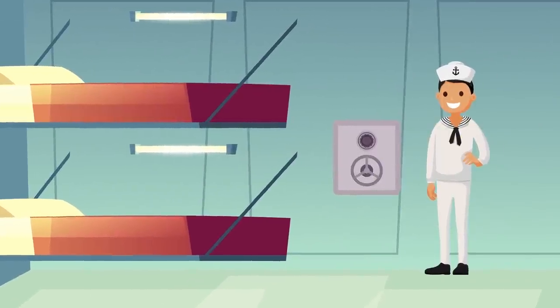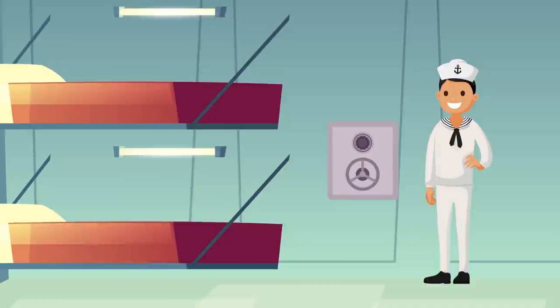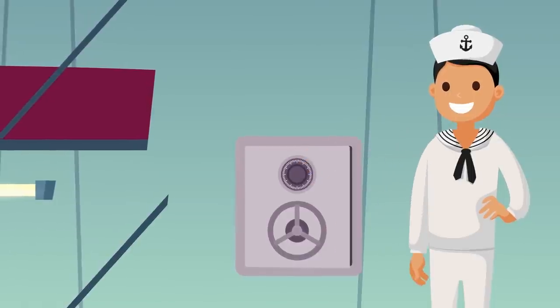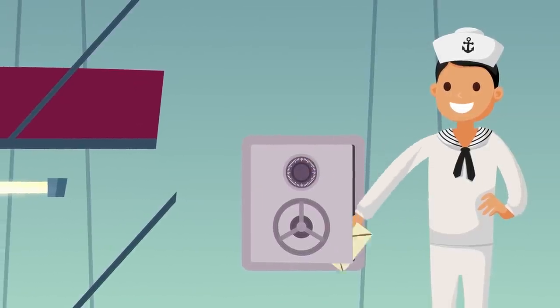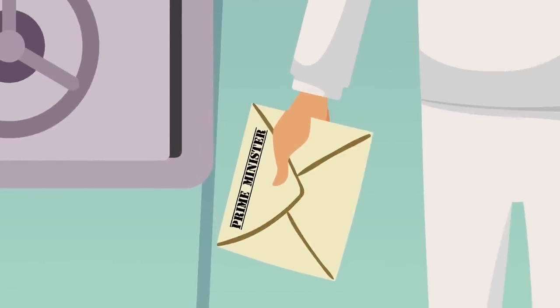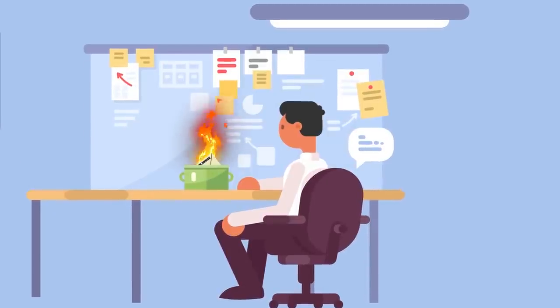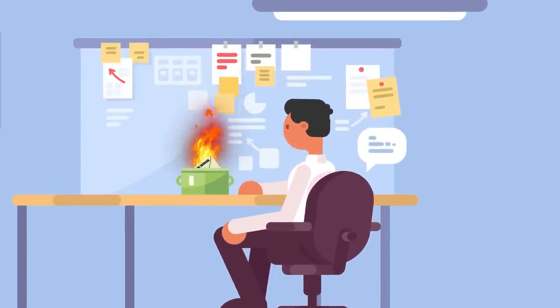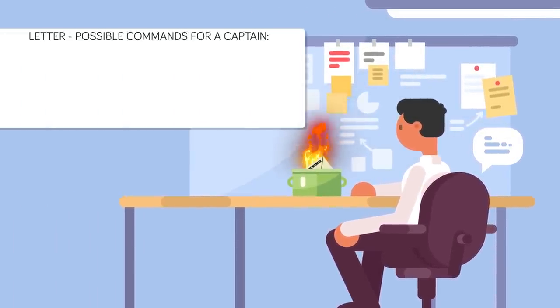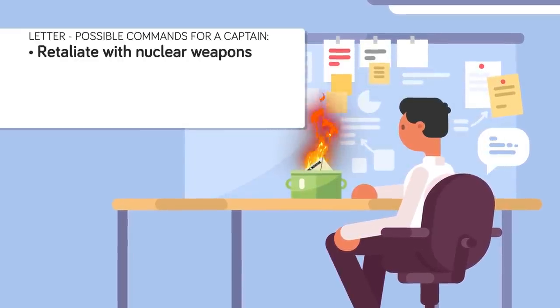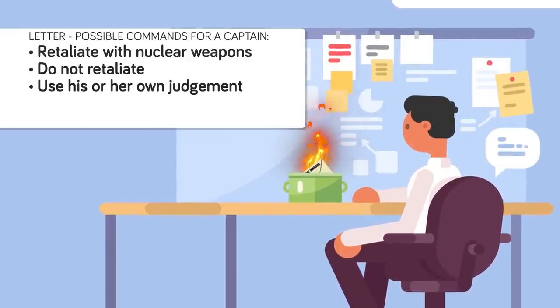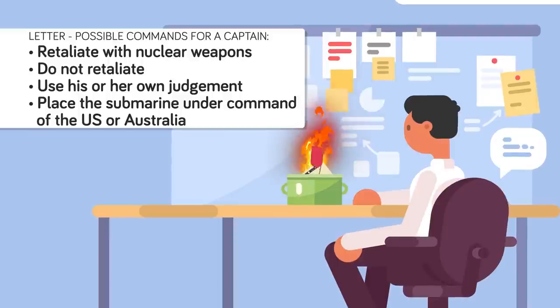28. Each British nuclear ballistic submarine contains a sealed and unopened letter of last resort from the current prime minister housed in a nested safe. The letters are handwritten instructions from the prime minister, which the captain of each sub is instructed to open only if the British government has been wiped out. The letters are destroyed after each new prime minister takes office and replaced with a new one. Only the British PM knows the content of the letters, but it is thought that they include commands for the captain to: A. retaliate with nuclear weapons, B. not to retaliate, C. use his or her own judgement, or D. place the submarine under command of the US or Australia.